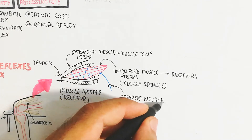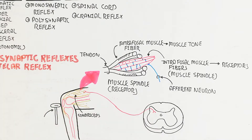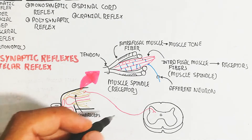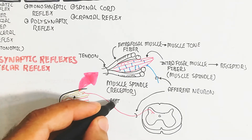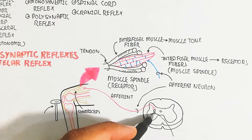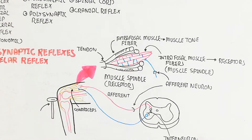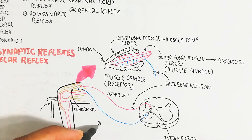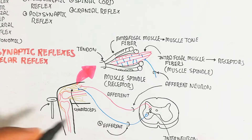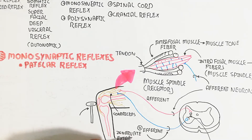The afferent neuron (shown in blue) carries the signal from the receptor — the intrafusal muscle fiber — and triggers the response. When we forcefully strike the knee with a hammer, a jerk occurs and the leg moves outward. The quadriceps acts as the afferent/sensory neuron sending the signal toward the efferent (motor) neuron.